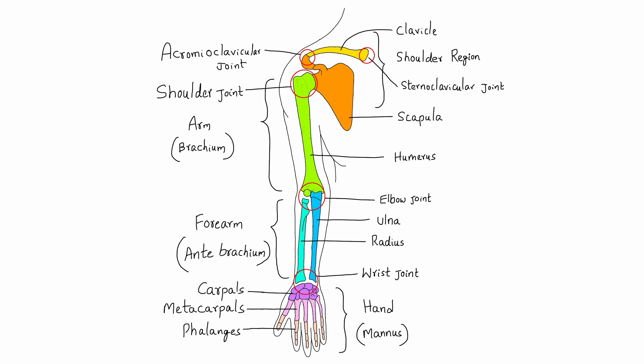The wrist consists of eight carpal bones arranged in two rows, each consisting of four bones. The carpal bones articulate with each other at the intercarpal joints, proximally with the radius forming the radiocarpal or wrist joint, and distally with the metacarpal bones at the carpometacarpal joints.